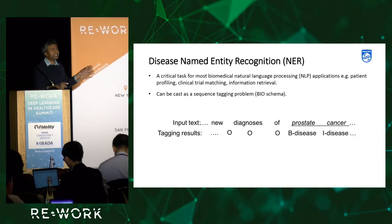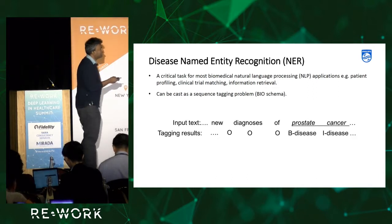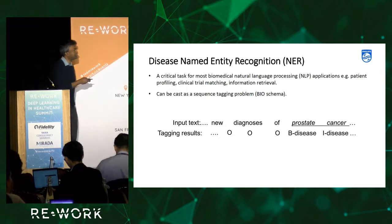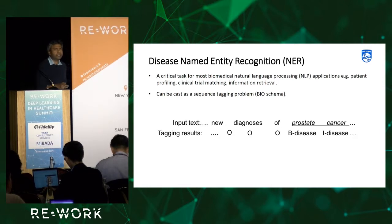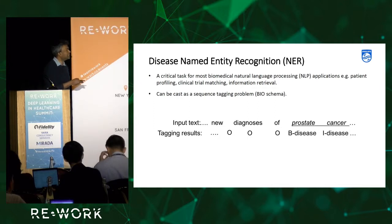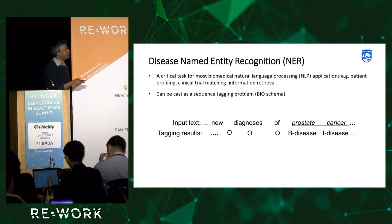Given an input text like 'new diagnosis of prostate cancer,' the tagging output uses a BIO schema: B for beginning of a disease name, I for inside the disease name scope, and O for outside the scope of the disease name.